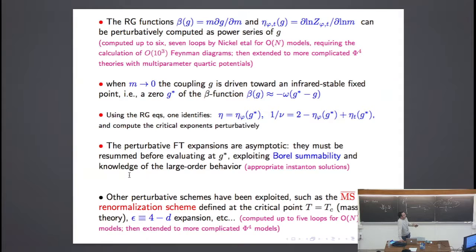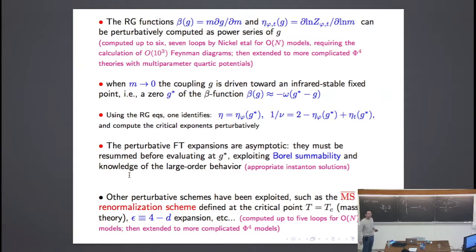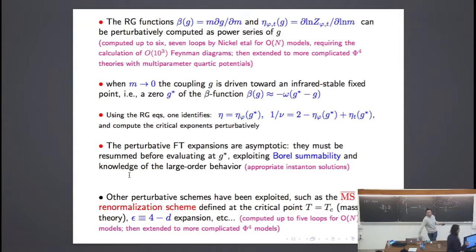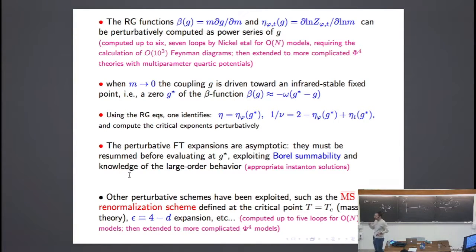In order to solve this — to get the renormalization group flow — we need to compute these functions, which are particularly important and can be done by perturbation theory. For example, in the case of O(N) models, these functions have been computed to six or seven loops.